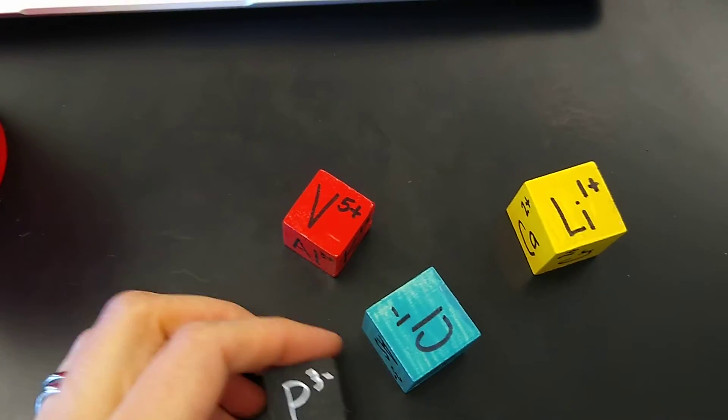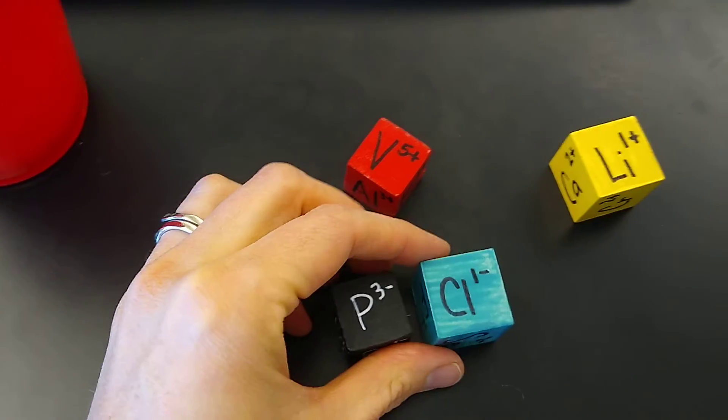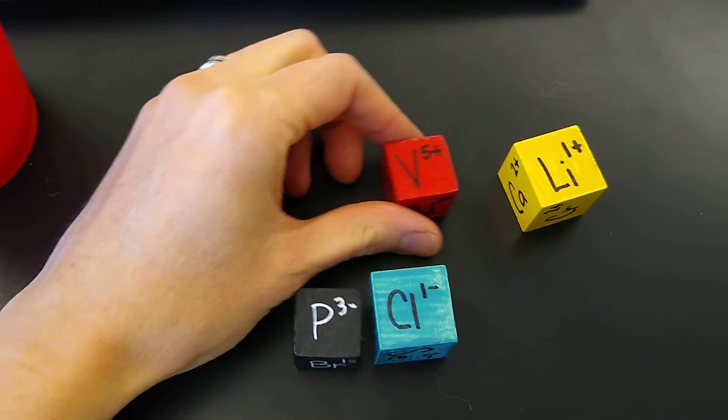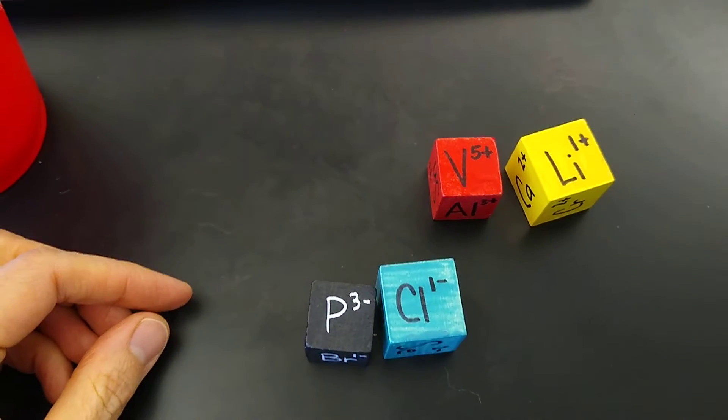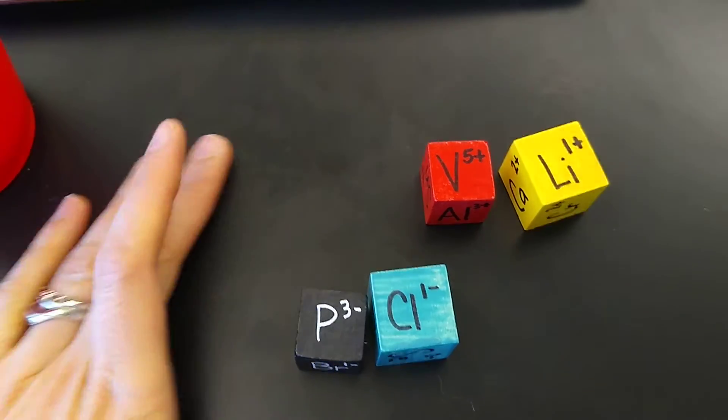Roll two. Again your negatives are going to go into the anions and your positives are going to go into the cations. It doesn't matter which order. Pause the video whenever you need to.